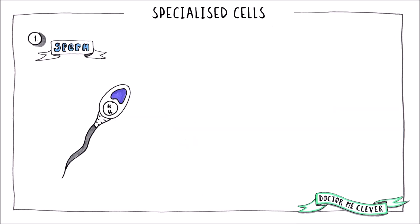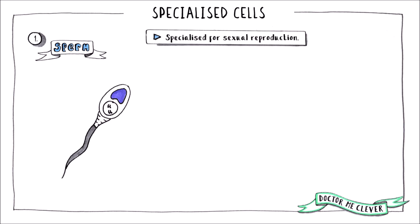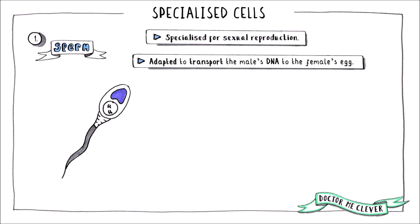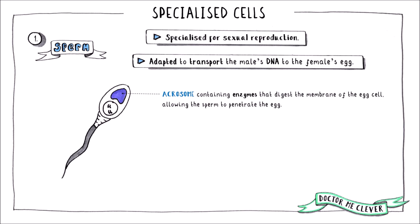The sperm cell is specialised for sexual reproduction and is adapted to transport the male's DNA to the female's egg. It has four features that make it perfect for this job. The first is an acrosome, found in the streamlined head of the sperm. It contains lots of enzymes that digest the membrane of the egg cell, allowing the sperm to travel into the egg with its cargo of DNA.